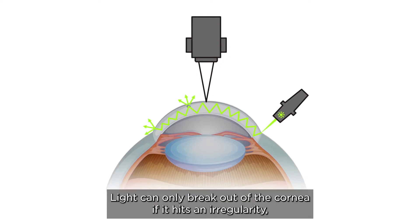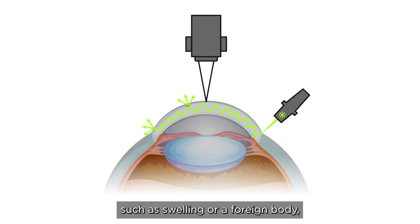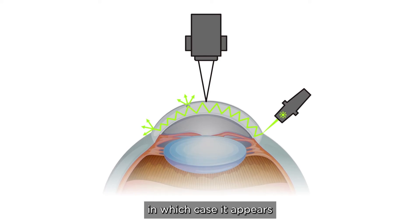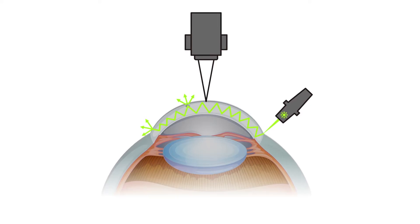Light can only break out of the cornea if it hits an irregularity such as swelling or a foreign body, in which case it appears as a haze or a pinpoint of light against the dark pupil background.